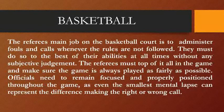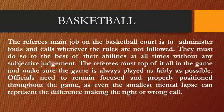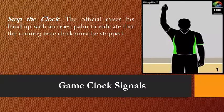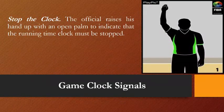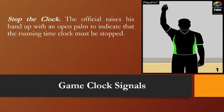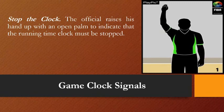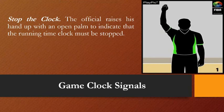Here are the official hand signals — the mechanics of the referee. First, we have the classification of game clock signals: to stop the clock. The official raises his hand up with an open palm to indicate that the running time clock must be stopped. In any violation or any interruption of the game, the official raises his hand up with an open palm, signaling that the clock must be stopped.